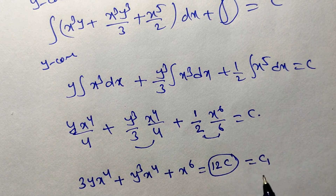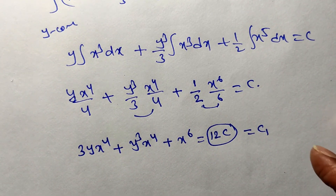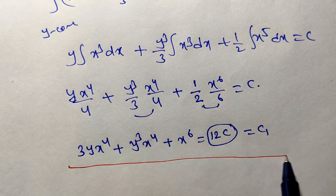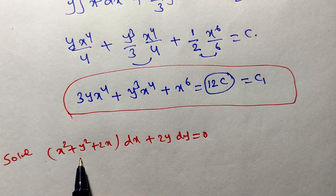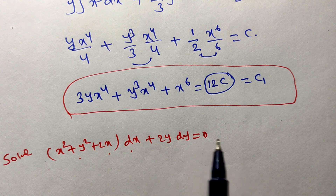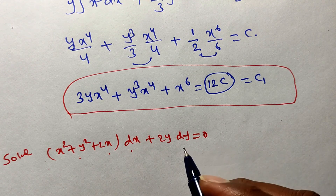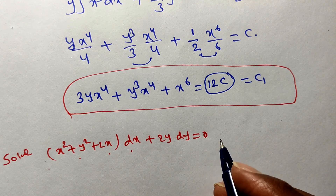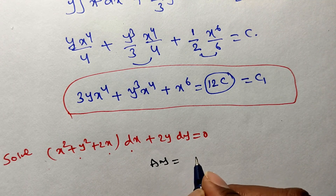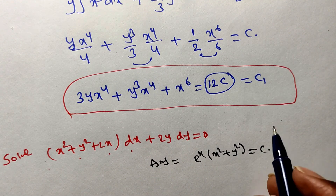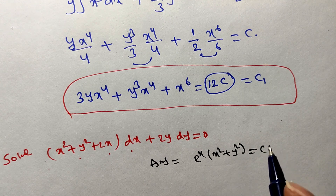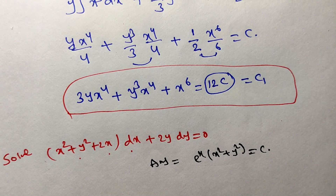This is the general solution for the given problem. I think you can solve these types of problems very easily. Here is one task for you: given (x² + y² + 2x)dx + 2y dy = 0, verify whether it is exact or non-exact, identify which method to apply, and find the general solution — which should be e^x(x² + y²) = c. Please try this problem and ping your answer in the comment box. Thank you for watching; in the next video we will discuss another type.